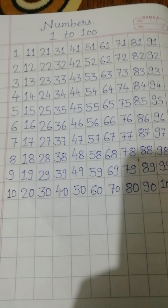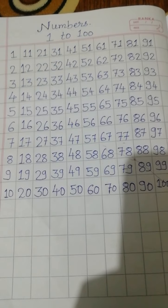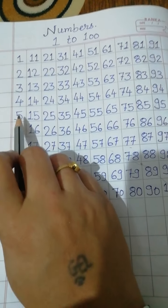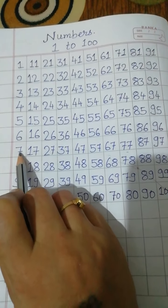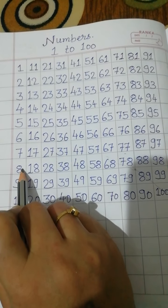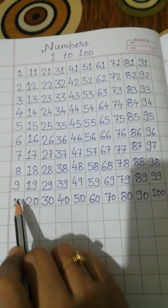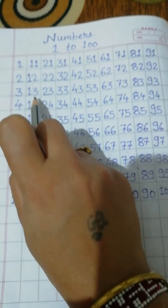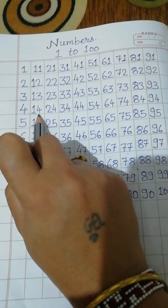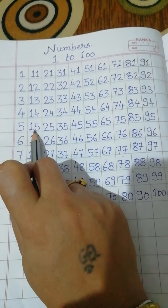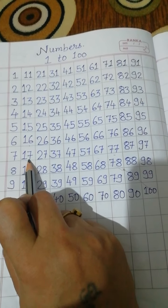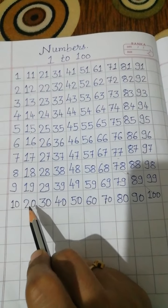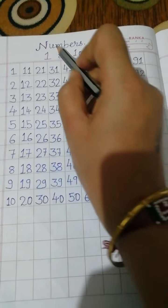Let's revise. 1, 2, 3, 4, 5, 6, 7, 8, 9, 10. 11, 12, 13, 14, 15, 16, 17, 18, 19, 20.